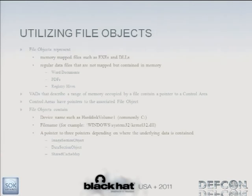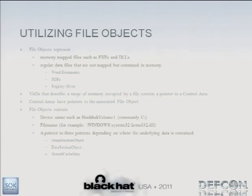Let's talk about ways to make this process better. We're going to utilize file objects, which can represent different things: memory mapped files including DLLs and EXEs, and data files that may not be mapped into memory but are in the cache — like Word documents, PDFs, registry hives, web history, or Windows XP restore points. The VADs are still interesting to us, but we're going to utilize a bit more data that they make available.